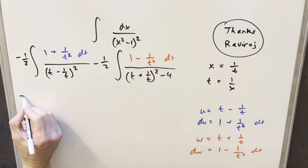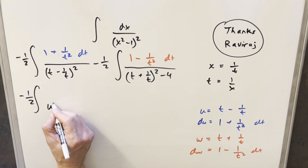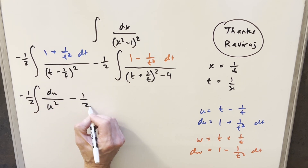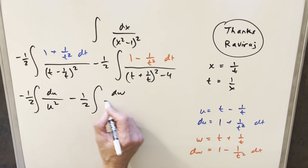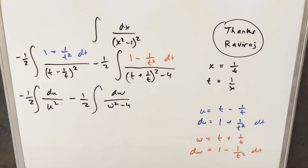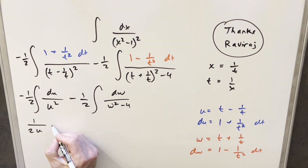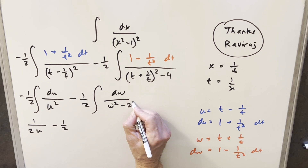Now we go ahead with the substitution. The first integral becomes minus 1/2 times the integral of du over u squared, which by power rule is just 1 over 2u. For the second integral, I bring the minus 1/2 out front, and I write the denominator as w squared minus 2 squared. The formula for integrating 1 over (w squared minus a squared) is 1 over 2a times the natural log of |(w minus a)/(w plus a)|. With a equals 2, we get 1/4.